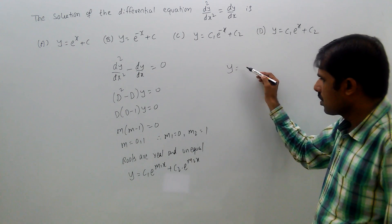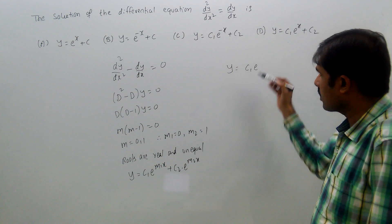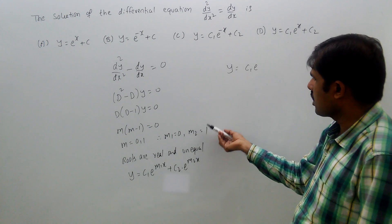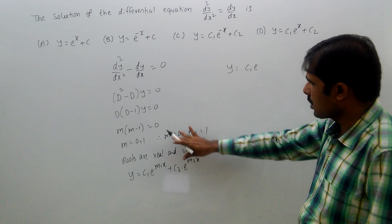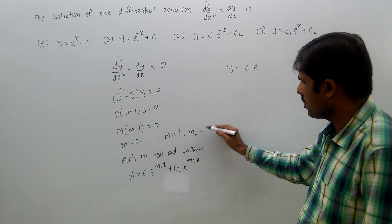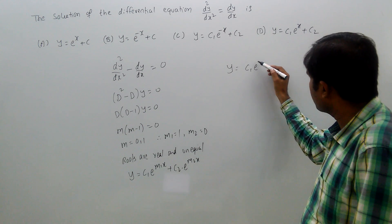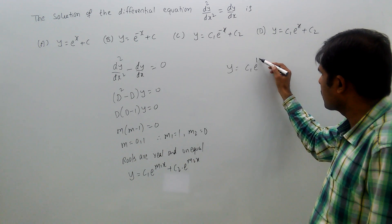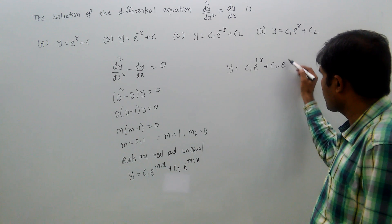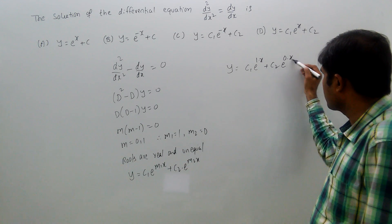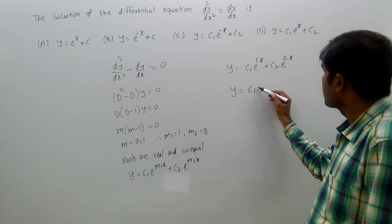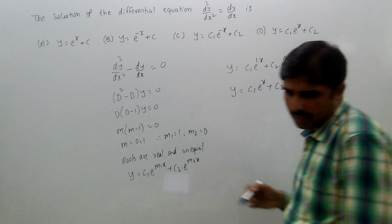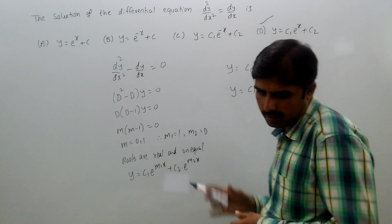Therefore, our solution is y equal to c1 e power m1 x plus c2 e power m2 x. Taking m1 equal to 1 and m2 equal to 0, that gives y equal to c1 e power x plus c2. That means option d is the correct answer.